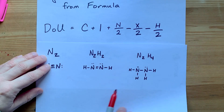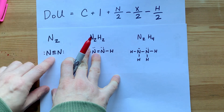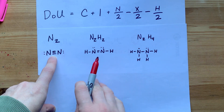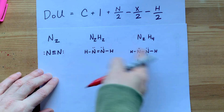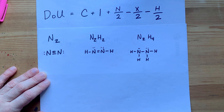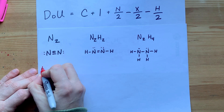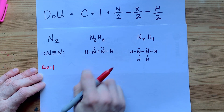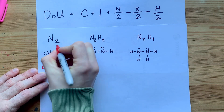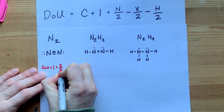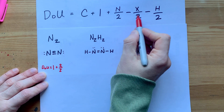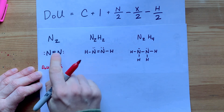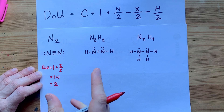To emphasize how well this formula works, let's do it for N2, N2H2, and N2H4 — from the nitrogen molecule all the way to hydrazine. For N2: there are no carbons, so C = 0. We have the constant 1, plus number of nitrogens divided by 2, which is 2/2 = 1. No halogens or hydrogens. That's 1 + 1 = 2. A triple bond contributes 2 to the degree of unsaturation.